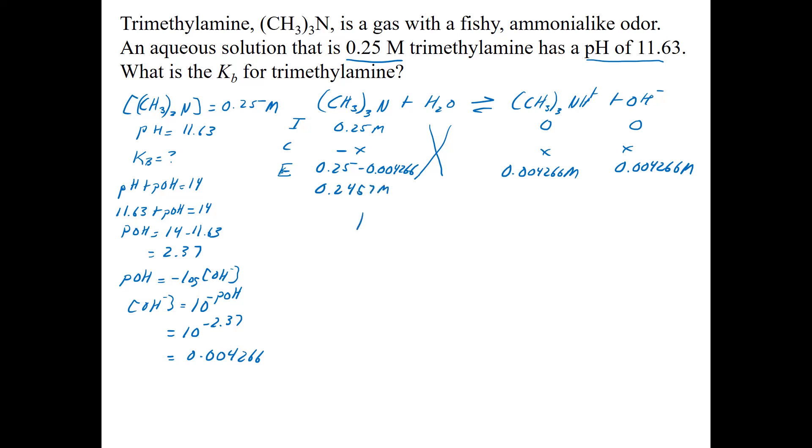Now I'll write my Kb expression. Kb is going to be my concentration of (CH3)3NH+ times OH minus over the (CH3)3N.